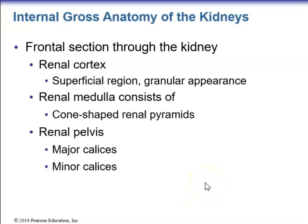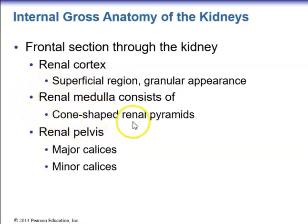Looking at the internal gross anatomy via a frontal section of the kidney, the outermost layer is the renal cortex — the superficial region with a granular appearance. The innermost layer is the renal medulla, which consists of cone-shaped renal pyramids with renal columns in between. At the apex or papilla of these pyramids, urine drains into structures called calyces.